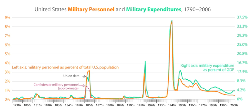In 1918, the Cacos, angered by the Marine-enforced practice of corvée, followed the leadership of Charlemagne Peralt and Benoit Batreville into rebellion again, against the 1,500-man 1st Marine Brigade and the 2,700-man Haitian Gendarmerie. The rebellion lasted for more than 19 months, October 17, 1918 to May 19, 1920. Both Caco leaders were killed in battle, along with at least 2,004 of their men. The Marines lost 28 slain in action and the Gendarmerie lost 70 killed.